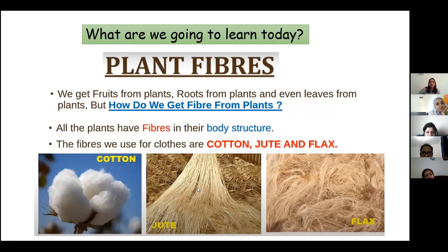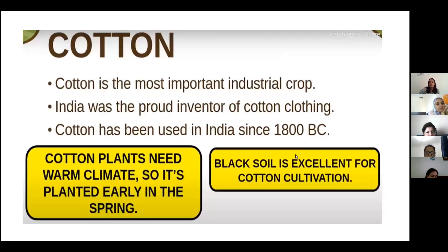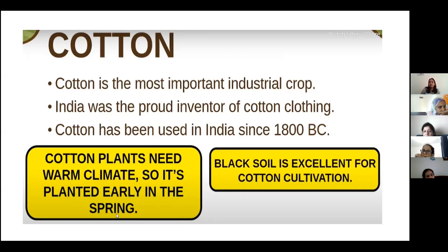All plants have fibers in their body structure, just like cotton. Cotton is the most important industrial crop. India was the proud inventor of cotton clothing, and since 1800 BC we have been using cotton clothes. Cotton plants need a warm climate and moderate rainfall — not too much rain — and are planted in spring season. They also need black soil.